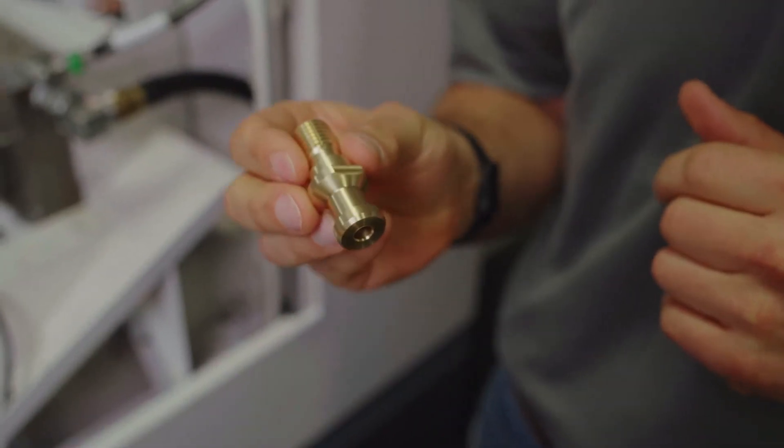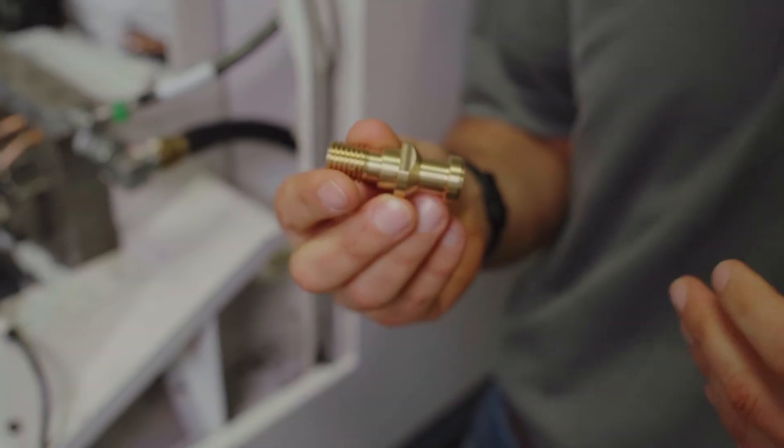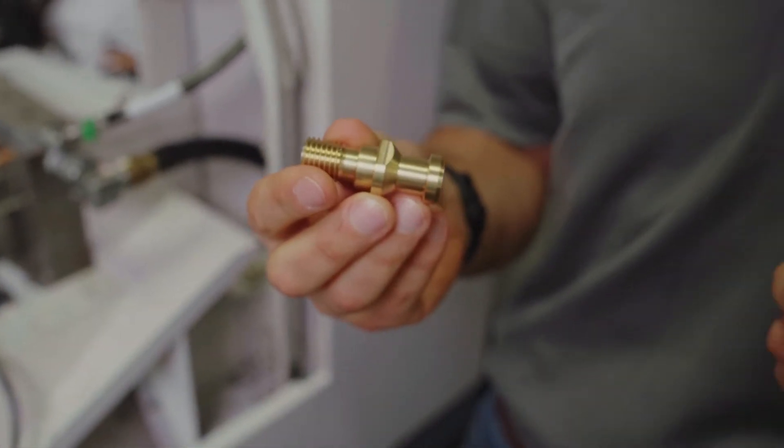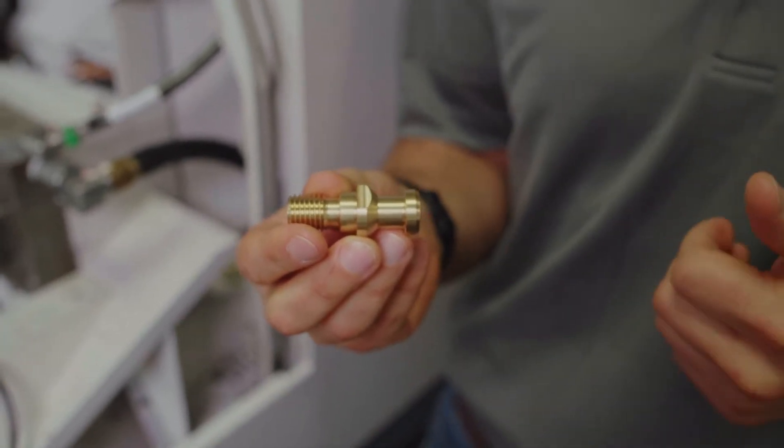So this part we make both on our turret style lathes and our Swiss lathes. The advantages of running this on our Swiss lathes is not only going back to the rigid point of cut, but it's efficiency.